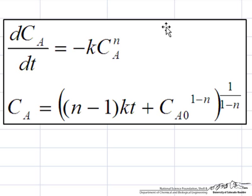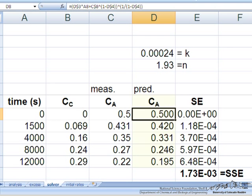So what I can do is take this formula and put it straight into this column here, which is what I have for the predicted value of C_A, and then reference that wherever I need k and n to values that we're going to change using the solver routine in Excel. And so the values that I've initially set are the values that we obtained from our differential analysis of .00024 and 1.93 for k and n respectively.